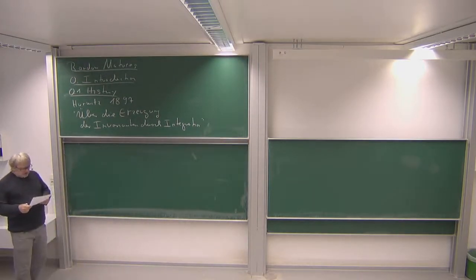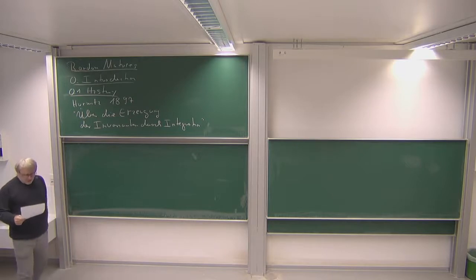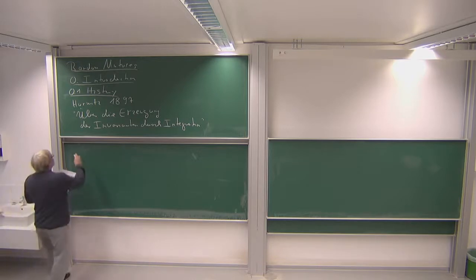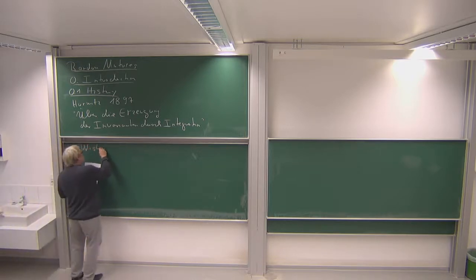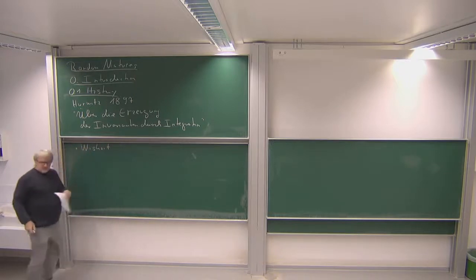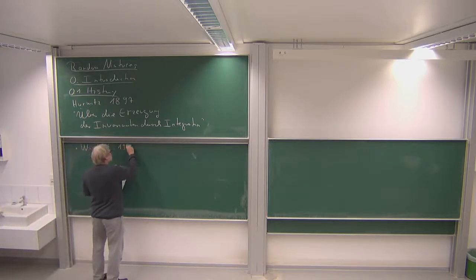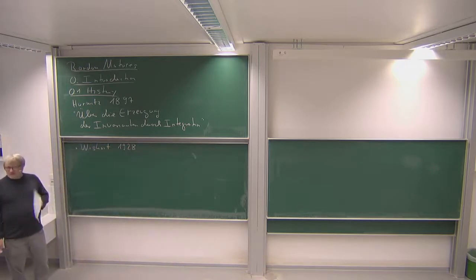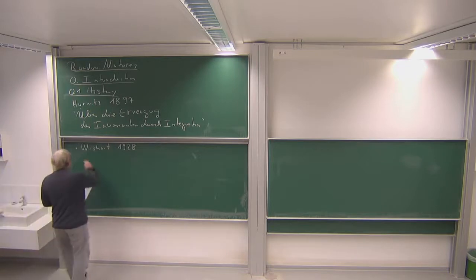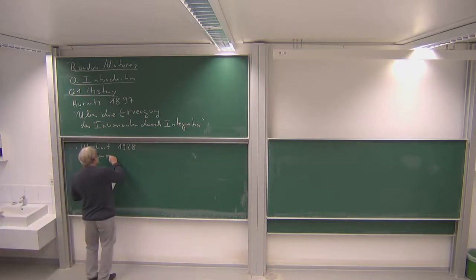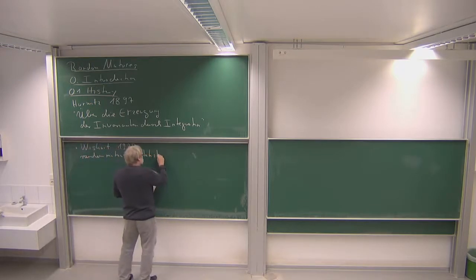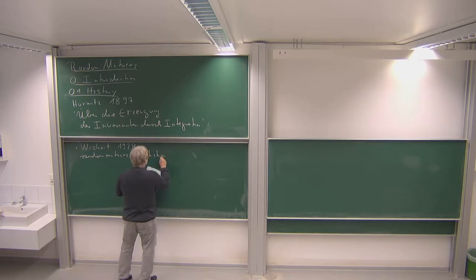But usually, the starting point where random matrices really were introduced as random matrices was by Wishart. He was a statistician, in 1928.